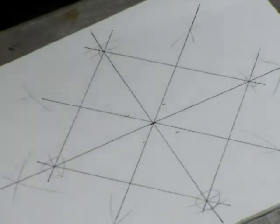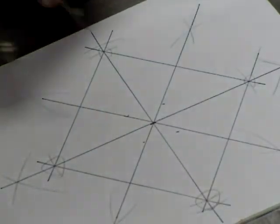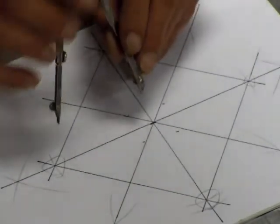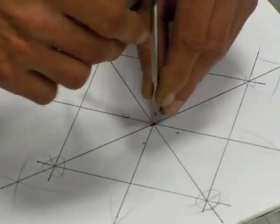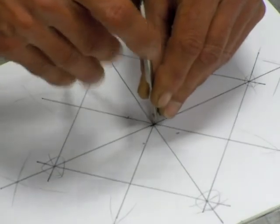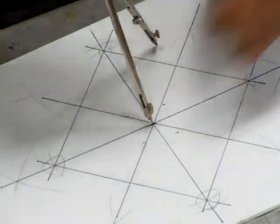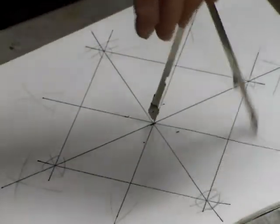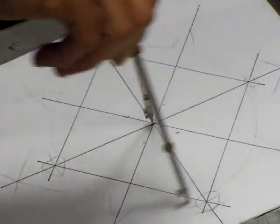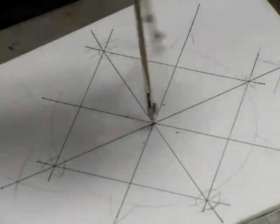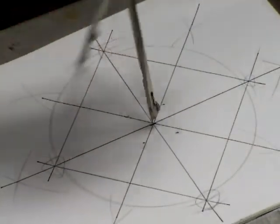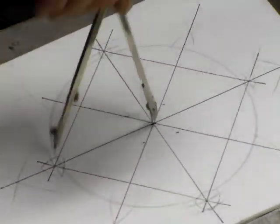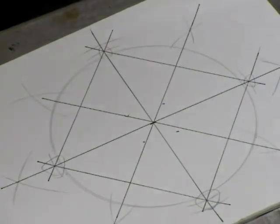Let me draw a circle so this kind of makes sense. Drawing is a little complicated. My circle is getting rough. Pressing hard.